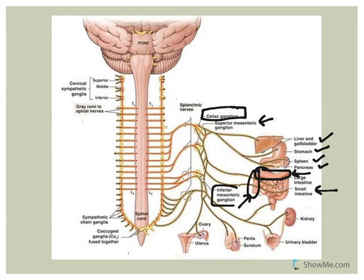The inferior mesenteric ganglion is the last example of a collateral ganglion. It innervates the terminal segments of the large intestine - the sigmoid colon and rectum area - as well as structures in the pelvic cavity including the bladder, internal reproductive organs, and also the kidneys and external genitalia.